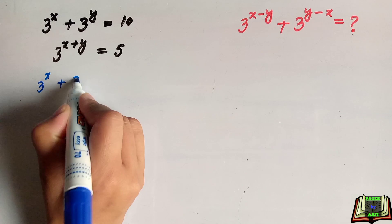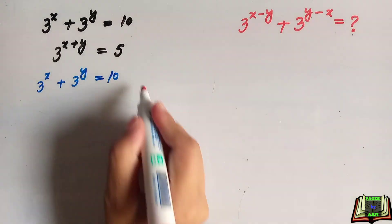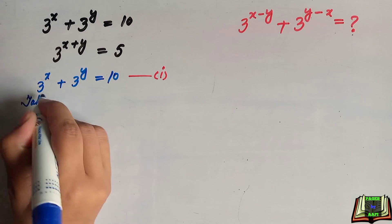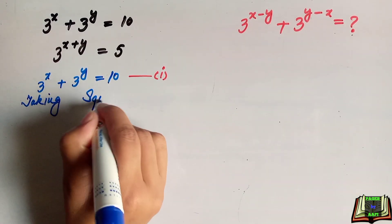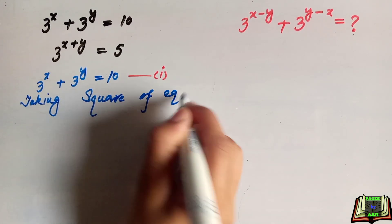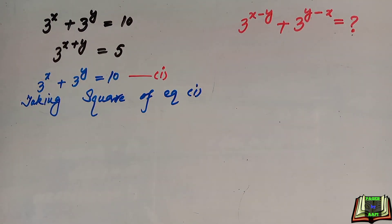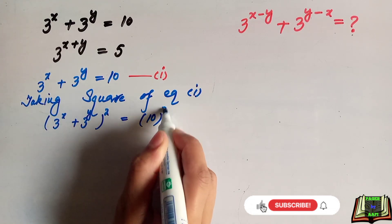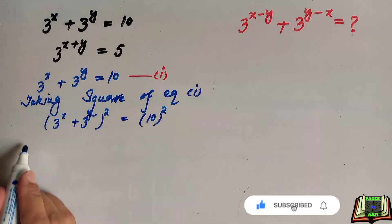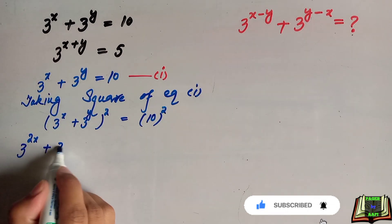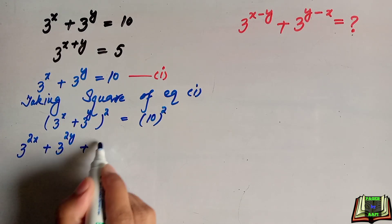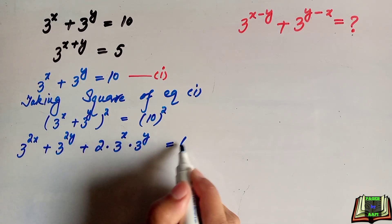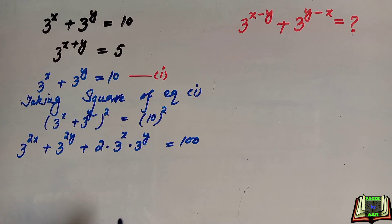Let's start the solution. We will assume 3 to the power x plus 3 to the power y equals 10 as equation 1. In the next step we are going to take the square of equation 1 on both sides. So we get: 3 to the power x plus 3 to the power y, whole square, equals 10 squared. Opening the square: 3 to the power 2x plus 3 to the power 2y plus 2 times 3 to the power x times 3 to the power y, using the identity a squared plus b squared plus 2ab, equals 100.